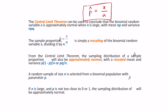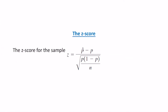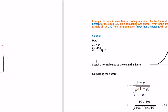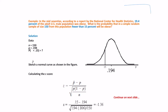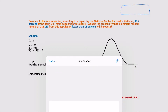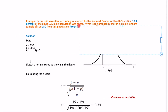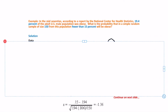The mean becomes p and the variance sigma-squared becomes p times (1 minus p) divided by n. If n is large and p is not too close to 0 or 1, the distribution is approximately normal. The z-score formula is: z equals p-hat minus p, divided by the square root of p times (1 minus p) divided by n. Let's take an example and try to solve this problem.